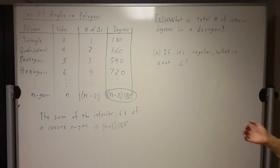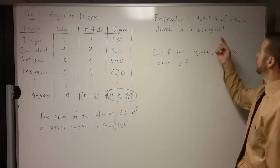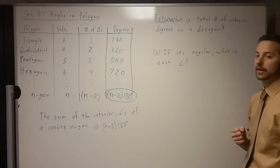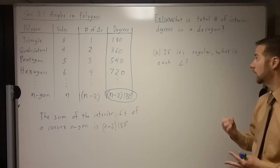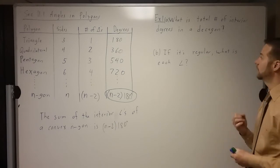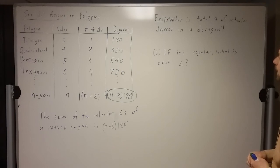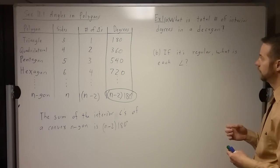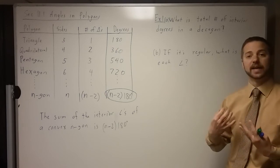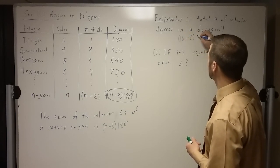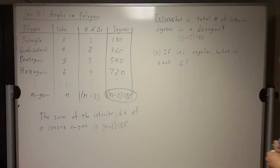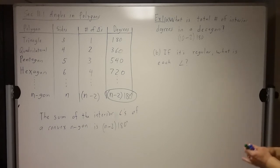Let's put this to use. What is the total number of interior degrees in a decagon? Decagon — like decade — means 10 sides. So n is 10. We've got (10 minus 2) times 180 degrees. That's 8 times 180, which is 1,440 degrees.